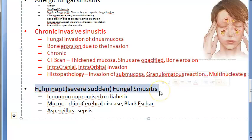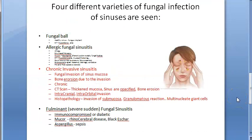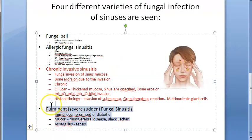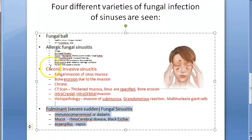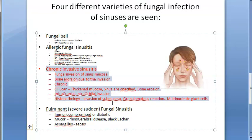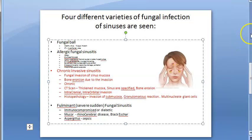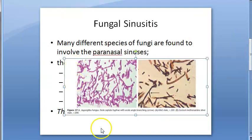Fulminant fungal sinusitis: sudden and severe, in immunocompromised or diabetic patients. Mucor and Aspergillus are mainly responsible. Mucor causes rhinocerebral disease with black eschar; Aspergillus causes no black eschar but can cause sepsis. Treatment is surgery plus antifungal therapy. That is all about fungal infection of the sinuses. Hope you have understood fungal sinusitis.